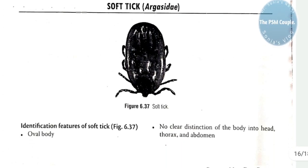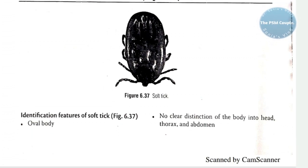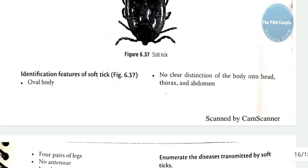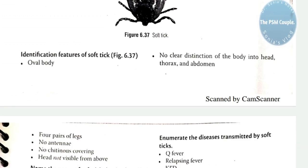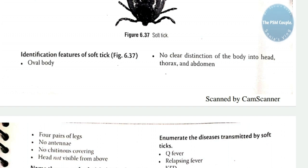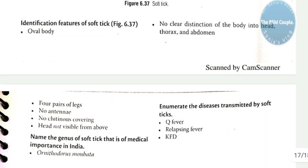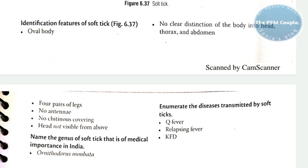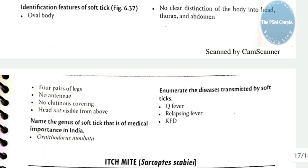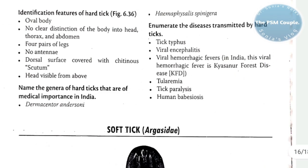The soft tick: identification features are oval body, no clear distinction into head, thorax, and abdomen; four pairs of legs; no antennae; no chitinous covering; head not visible from above. The genus of soft tick of medical importance is Ornithodoros. Diseases transmitted by soft tick include Q fever, relapsing fever, and KFD.